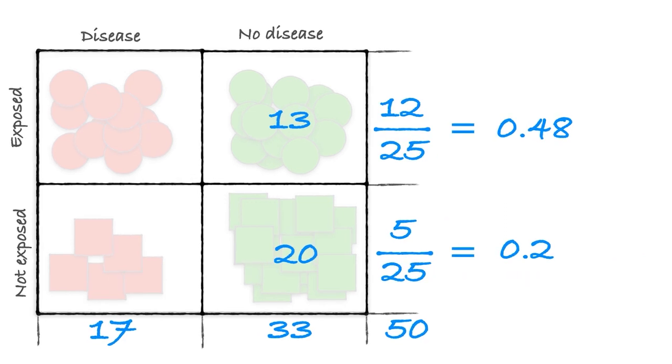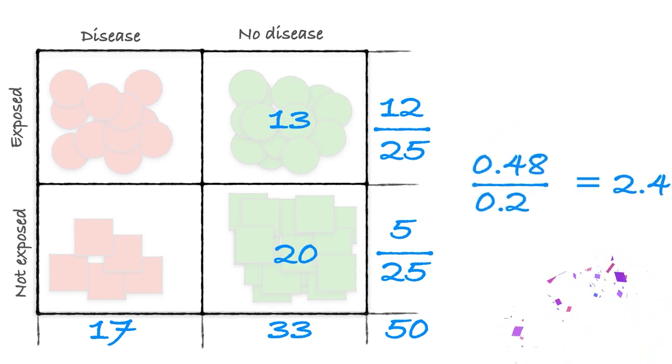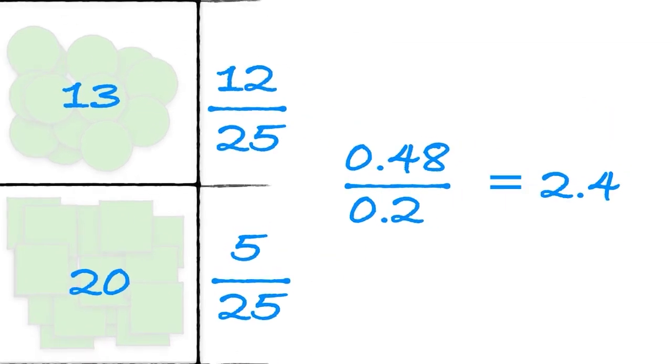And if we want to know how much more at risk smokers are than non-smokers, we simply calculate the ratio. Voila. In this case, the risk ratio is 0.48 divided by 0.2, giving us a relative risk of 2.4. In other words, smokers are 2.4 times more likely to get this disease than non-smokers. Easy peasy, lemon squeezy.